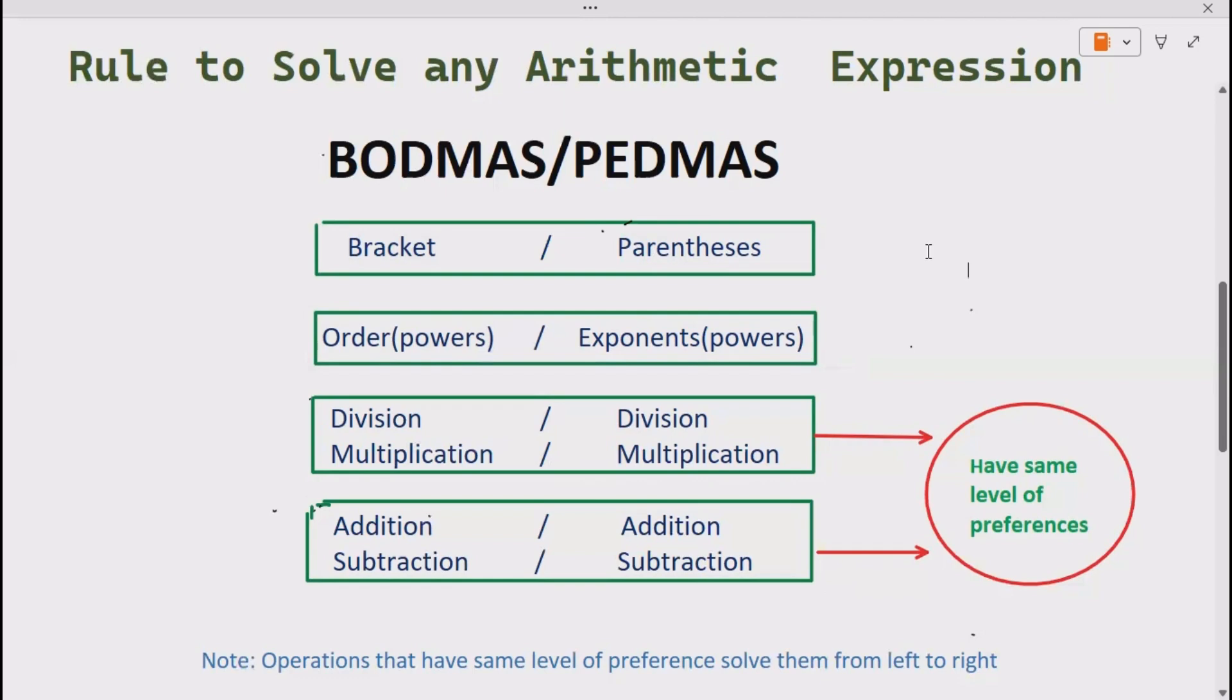What does it mean? It means whenever you are solving any arithmetic expression and both division multiplication present in your expression at the same time, solve that operation first that comes first going from left to right. Same is true for addition subtraction.